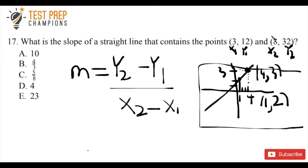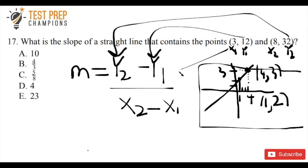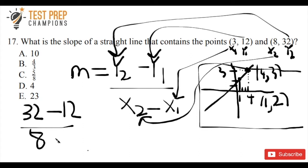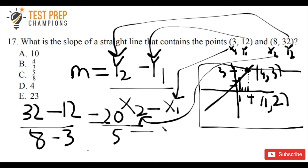We're just going to plug those values into the formula. y2 is 32, y1 is 12, x2 is 8, and x1 is 3. So we get: m equals 32 minus 12, over 8 minus 3. That gives us 20 over 5, and 20 divided by 5 is 4. So 4 is the answer.